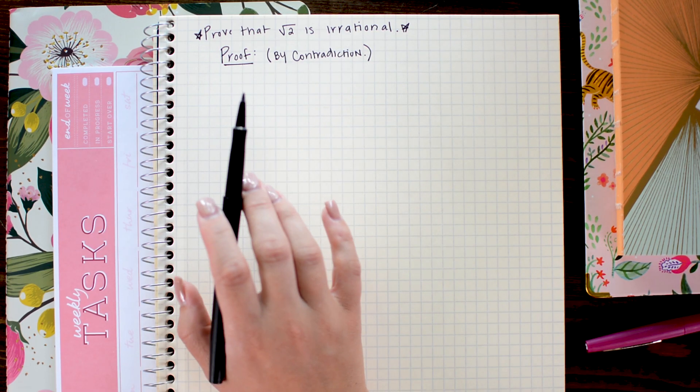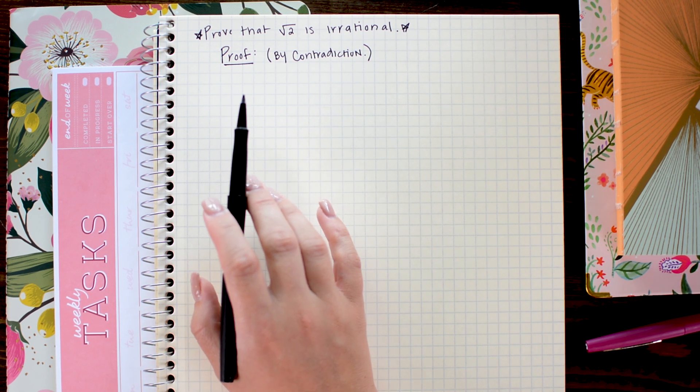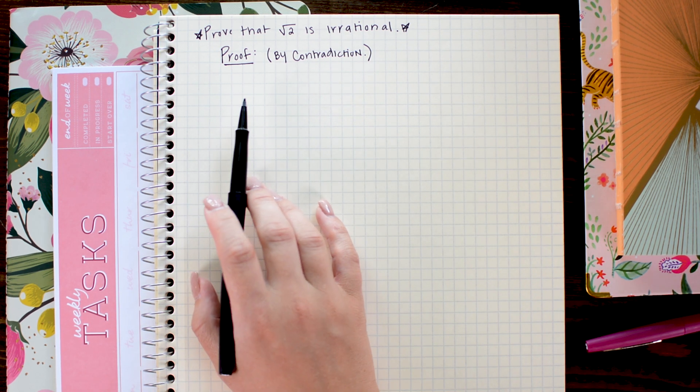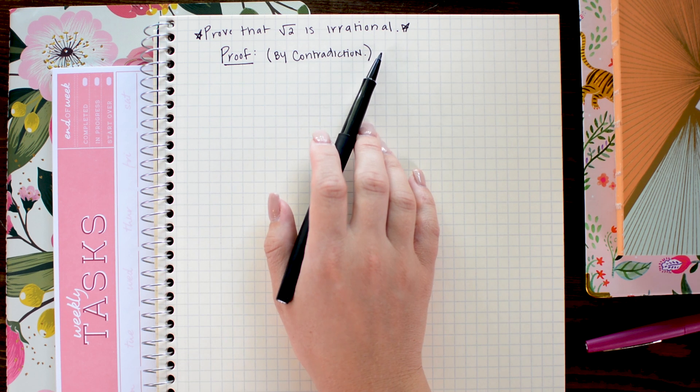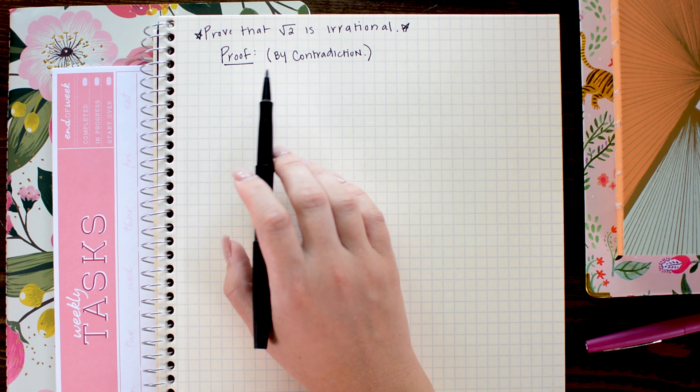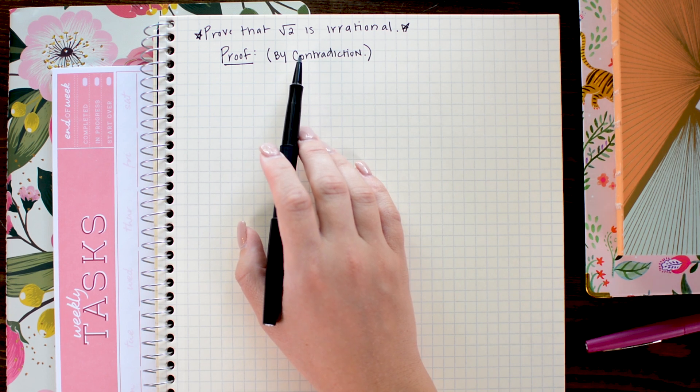So to get started on any proof by contradiction, you generally want to make an assumption, and that assumption needs to be the opposite of what you're trying to prove. In this problem, we are trying to prove that the square root of 2 is irrational. So I'm going to start my proof by assuming that the square root of 2 is rational instead of irrational.